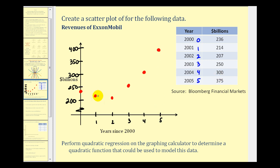So you can see the pattern of this data does fit the shape of a quadratic function that opens upward. Now let's go ahead and duplicate this scatter plot on the graphing calculator and then we'll determine the regression equation as a quadratic function.